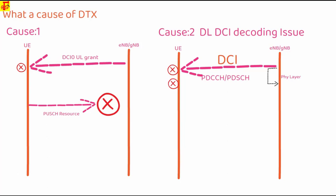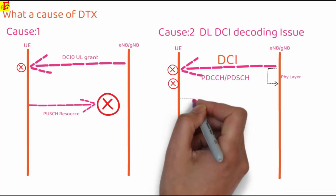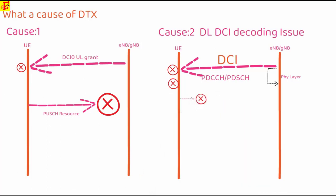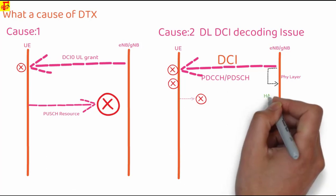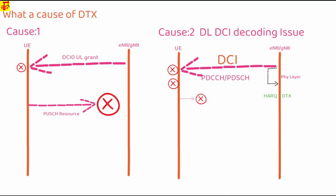If DCI didn't decode, then there is no possibility to read the PDCCH and decode the HARQ. So UE does not transmit the HARQ for that PDCCH. Hence, eNodeB will find DTX at HARQ information.